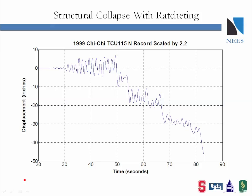This slide shows a single degree of freedom structure with ratcheting-type collapse after being subjected to the Chi Chi earthquake scaled by a factor of 2.2. When we talk about collapse with ratcheting, if we look at this figure, we notice that up to approximately 50 seconds, the structure cycles about its undeformed configuration, or at least has relatively small residual deformations. Then the structure experiences a very large inelastic response at a first plateau until a second pulse increases the lateral deformation. Finally, the structure deforms even more prior to collapse with a noticeable third segment until the final collapse at approximately 80 seconds.